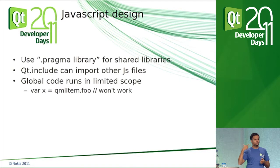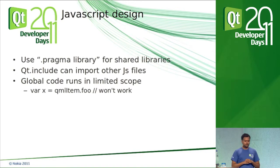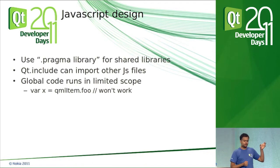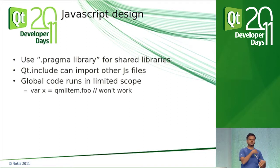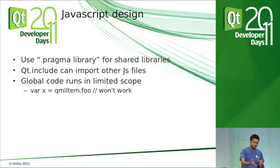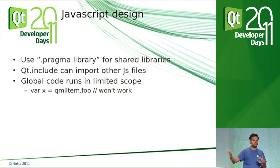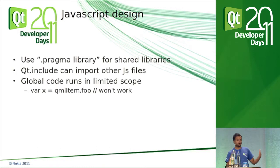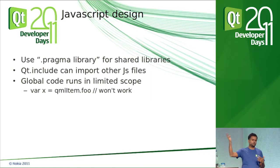You can use Qt.include to include other JavaScript files into your current JavaScript. Another thing to remember: global code in JavaScript does not have access to QML yet when it runs. Think of it as: your QML file imports foo.js, foo.js is being loaded, the global code runs, but the QML item is still being constructed — so the global code doesn't have access to QML objects. The way to fix this is to have a callback from QML into JavaScript — for example, in Component.onCompleted of your QML, call JavaScript.initialize().